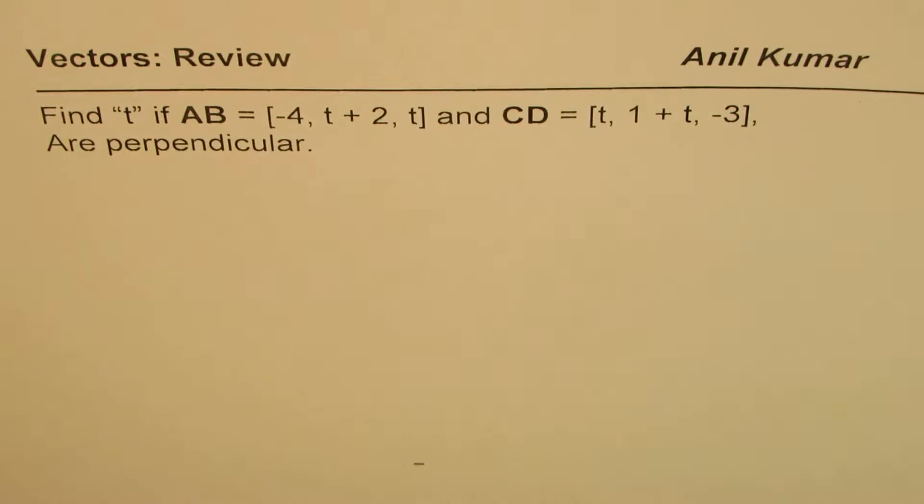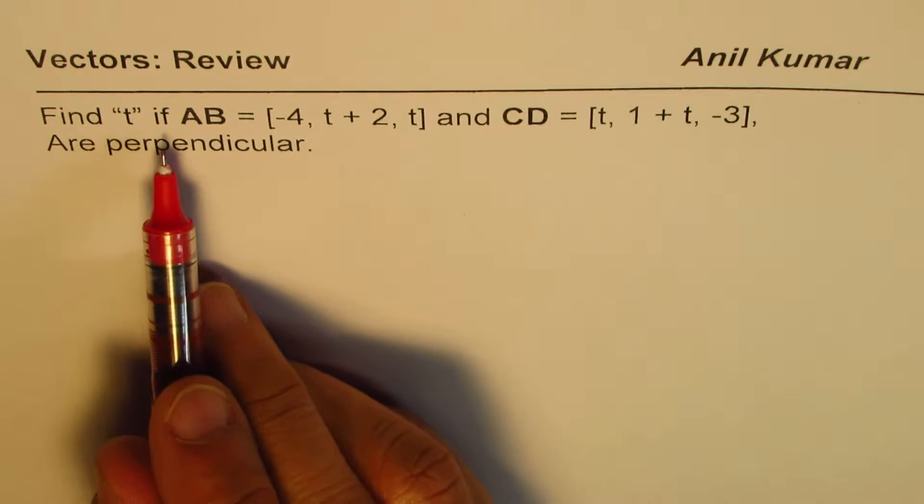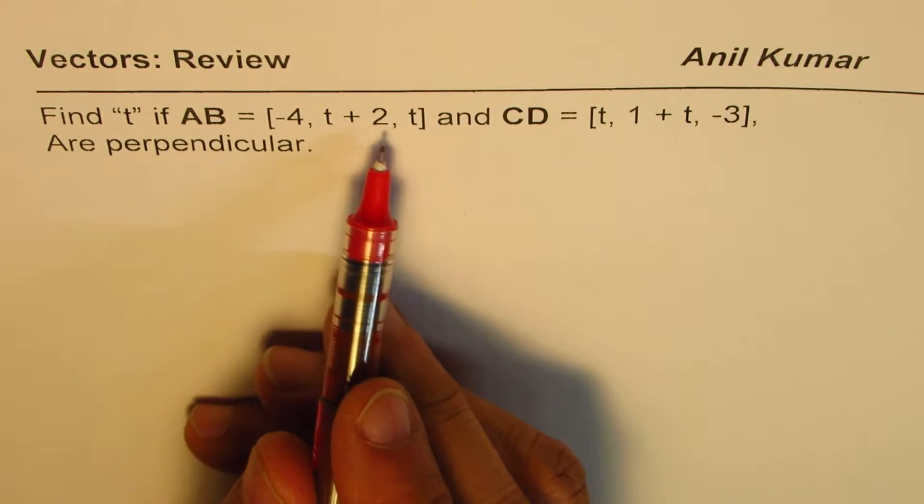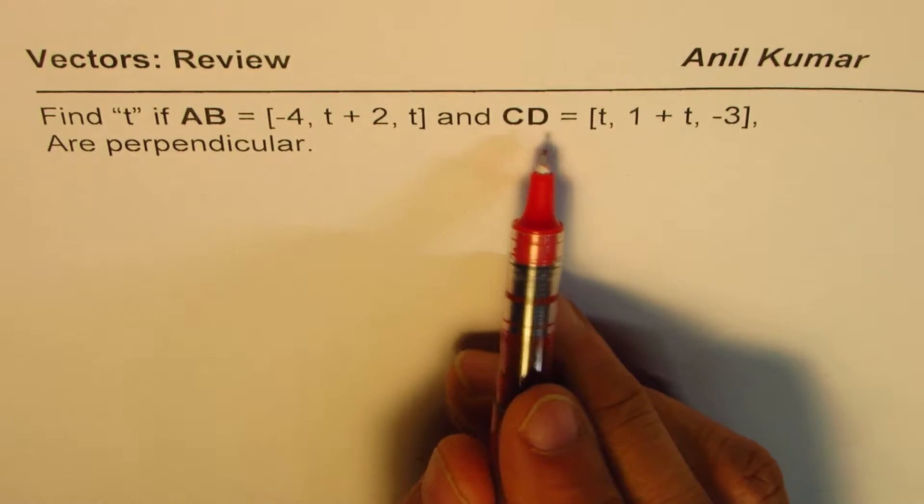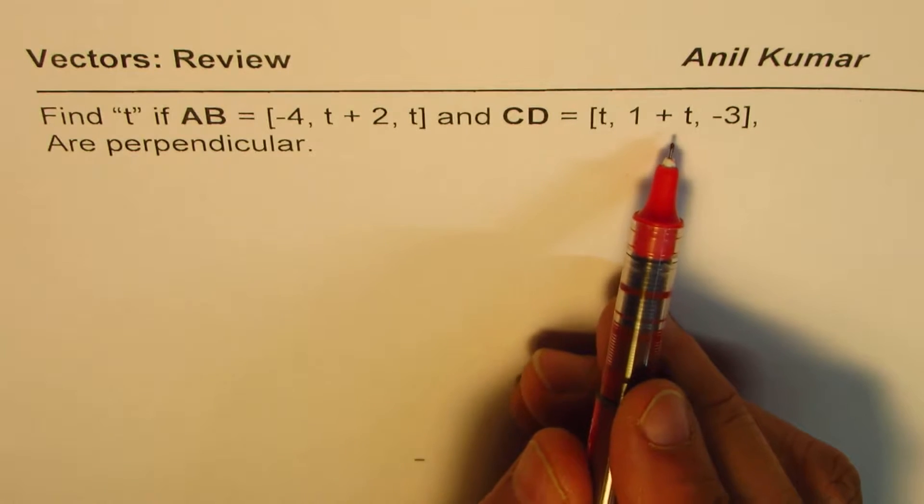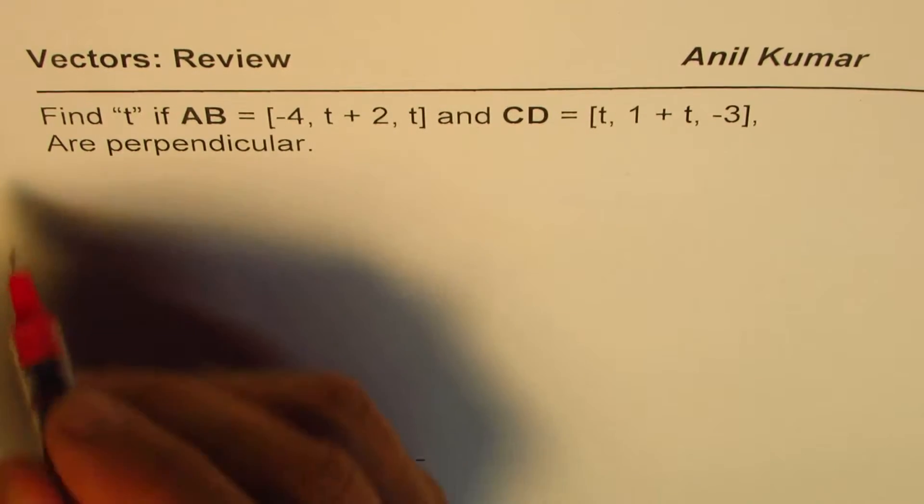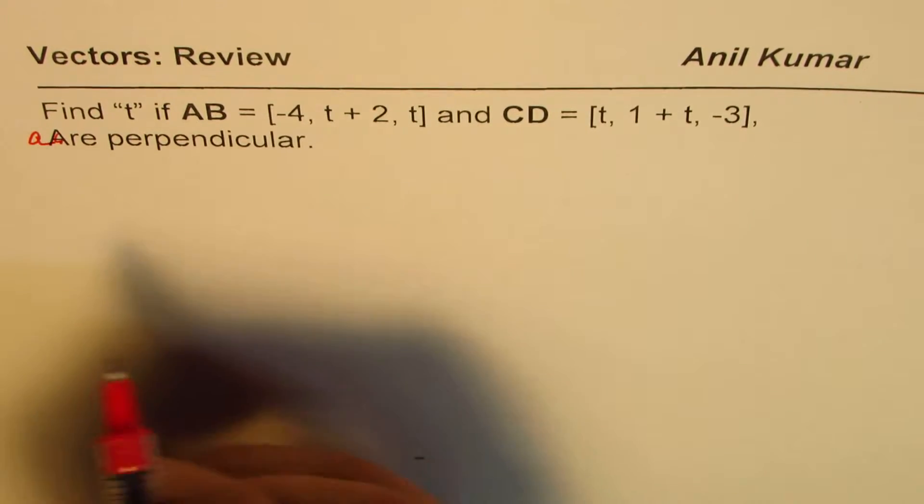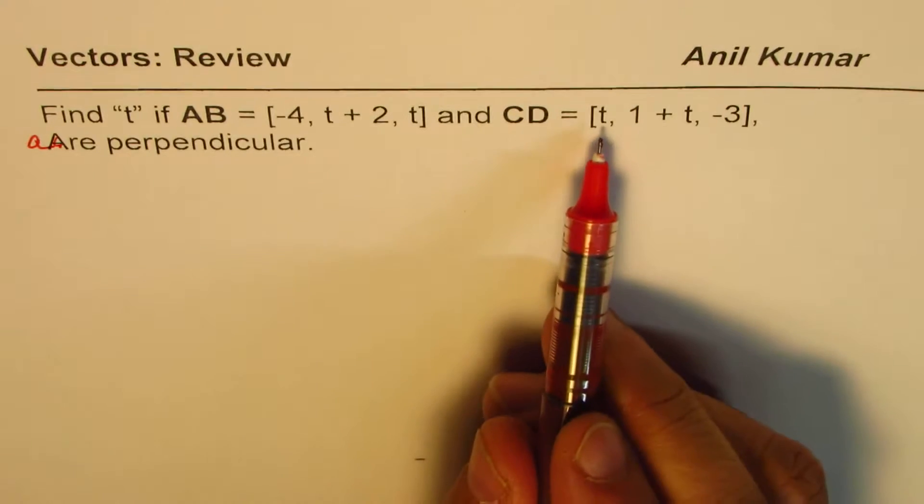The question here is find t if AB equals minus 4, t plus 2, t and CD equals t, 1 plus t, minus 3 are perpendicular. So, if these vectors are perpendicular, we need to find t.